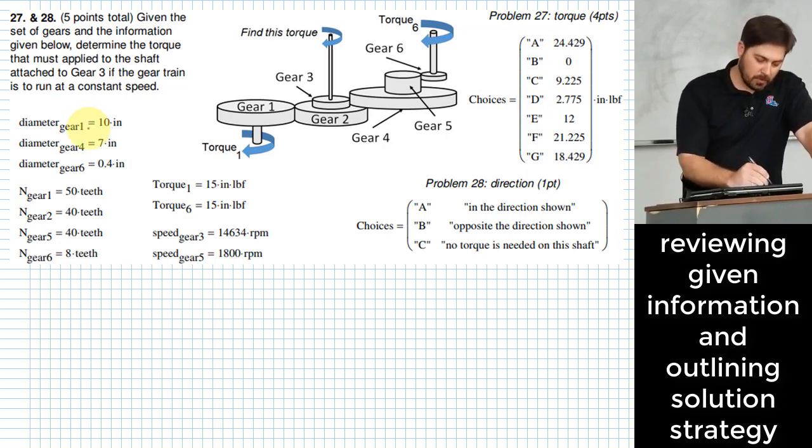And we're given a number of different kinds of information here. So for instance, gears one, four, and six, we have what the diameters are of those gears. For gears one, two, five, and six, we have what the teeth are, how many teeth there are for those gears.